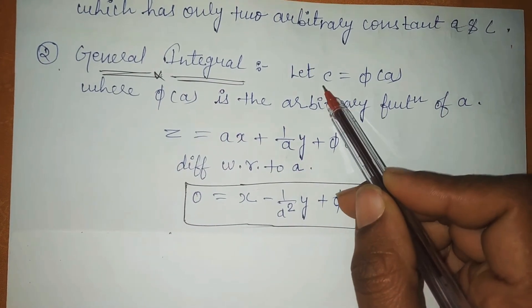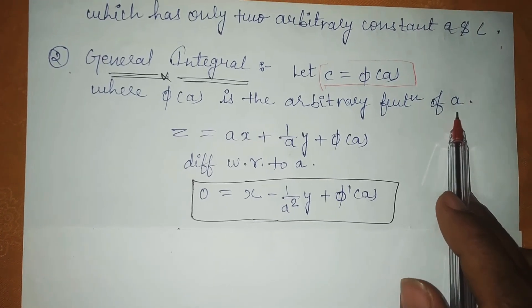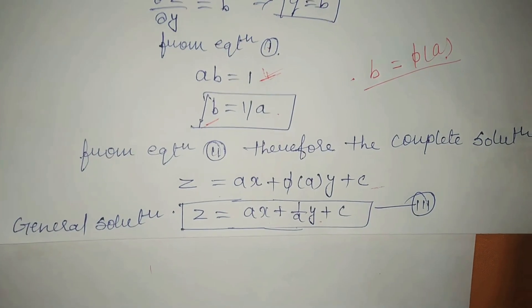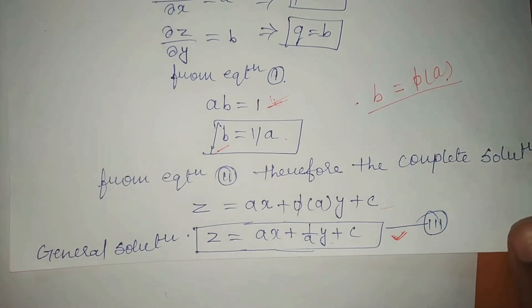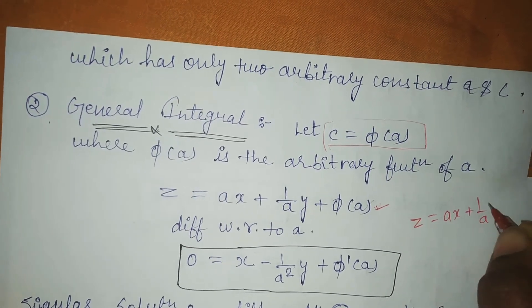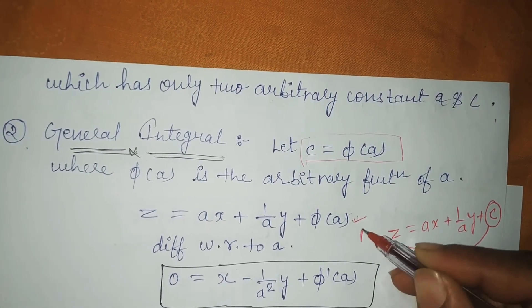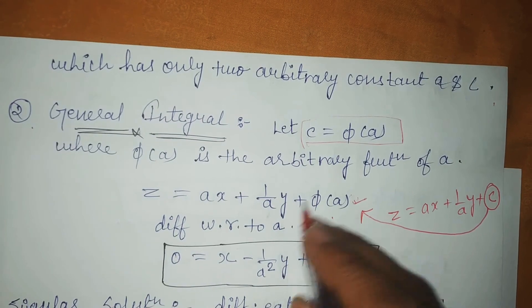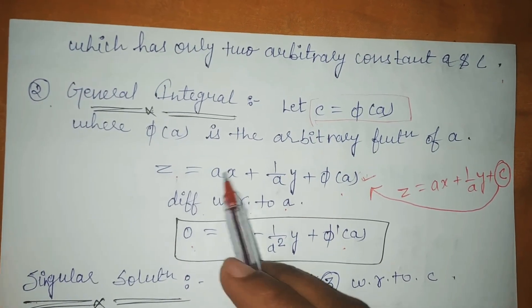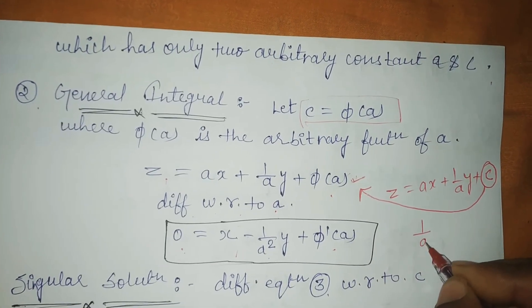For the general solution, the standard form is C = φ(A), where φ(A) is an arbitrary function of A. Our last equation was z = ax + (1/a)y + c. Now we replace C with φ(A), so the equation becomes z = ax + (1/a)y + φ(A). We then differentiate the complete equation with respect to A, giving 0 on the left side, and on the right side only x remains from the ax term.